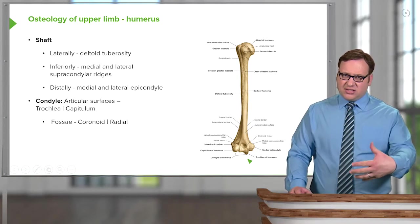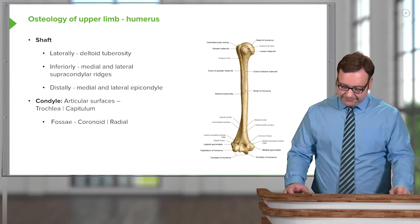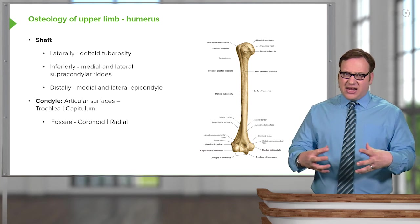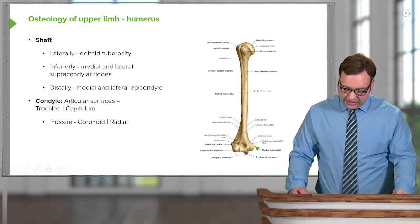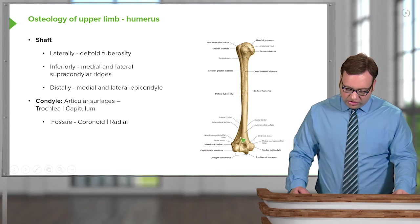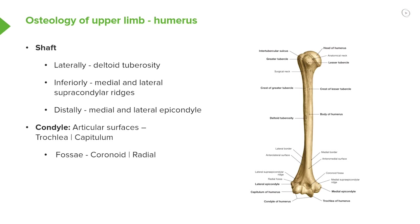As the humerus passes towards the elbow joint it begins to dilate, and these ridges form that dilation, eventually leading to the lateral and medial epicondyles. We can also see on the lateral aspect a groove known as the deltoid tuberosity, which is the attachment site for the deltoid muscle.